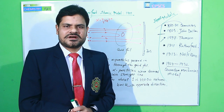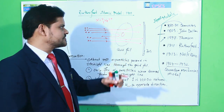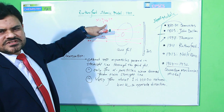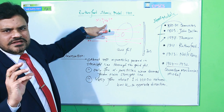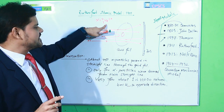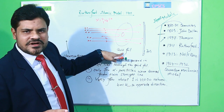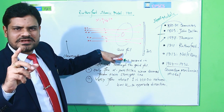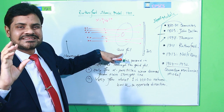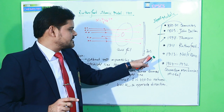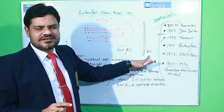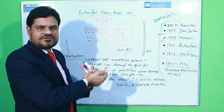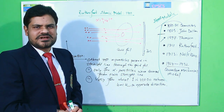Mr. Rutherford took this alpha particle source along with another apparatus: a gold foil as the target atom, and behind the gold foil there was a zinc sulfide screen. This was the arrangement of the alpha particle scattering experiment by Rutherford.